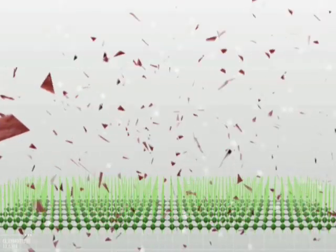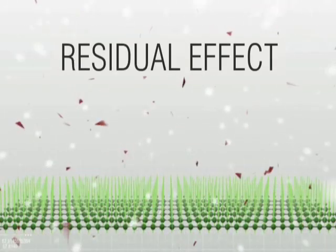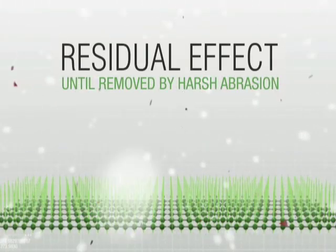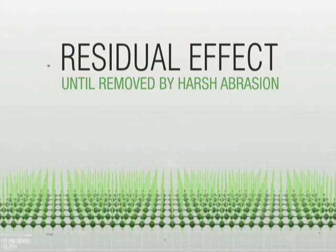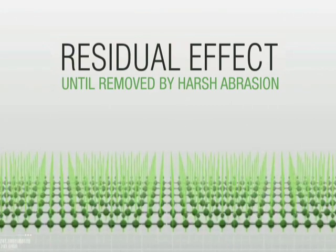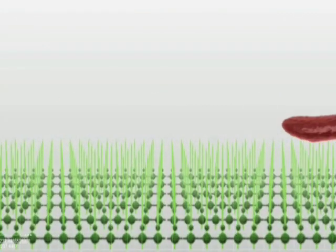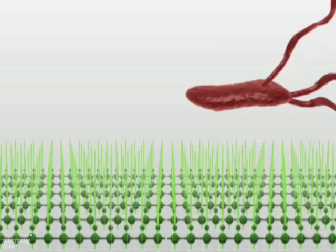As the Spada molecules do not suffer any alteration and are strongly bonded to the surface, the swords can kill microbe after microbe and the antimicrobial effect is durable. The surface continues being protected against all kinds of microorganisms.